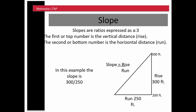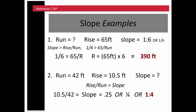Slope is also a fraction or ratio. Slope is expressed as the rise over the run. The rise is the vertical portion of an incline from point A to point B — how much vertical distance is traveled. The run is the horizontal distance. So rise over run gives us the slope. In this instance, the rise is 300 feet and the run is 250 feet, giving a slope of 300 over 250. You can divide that out to arrive at a decimal or percentage.